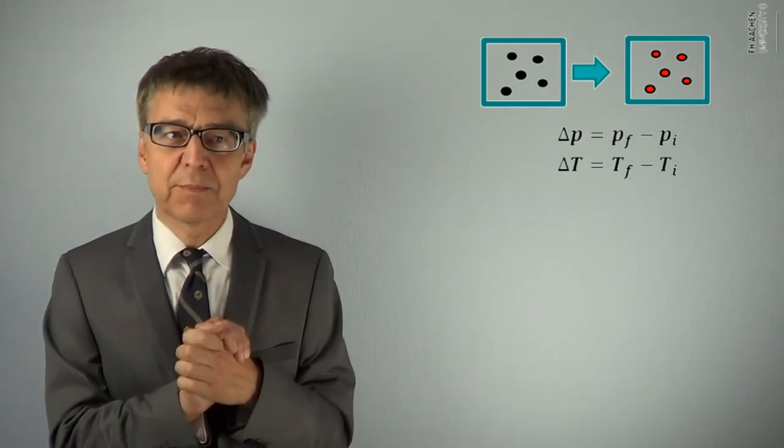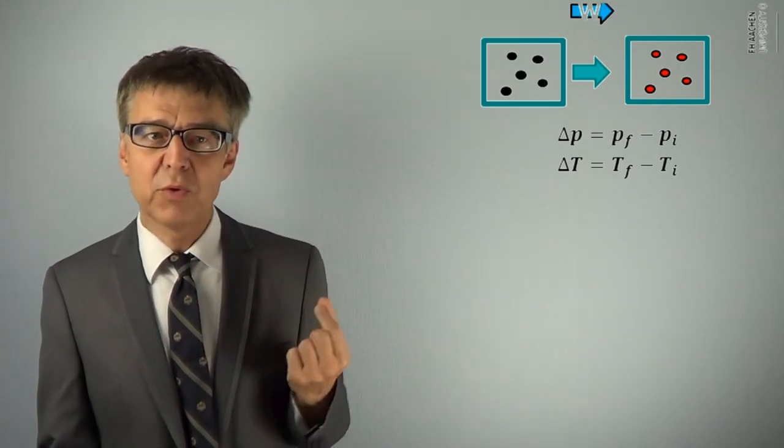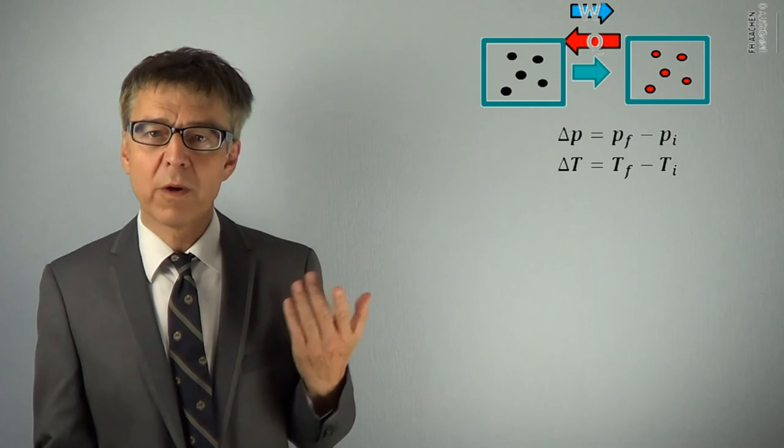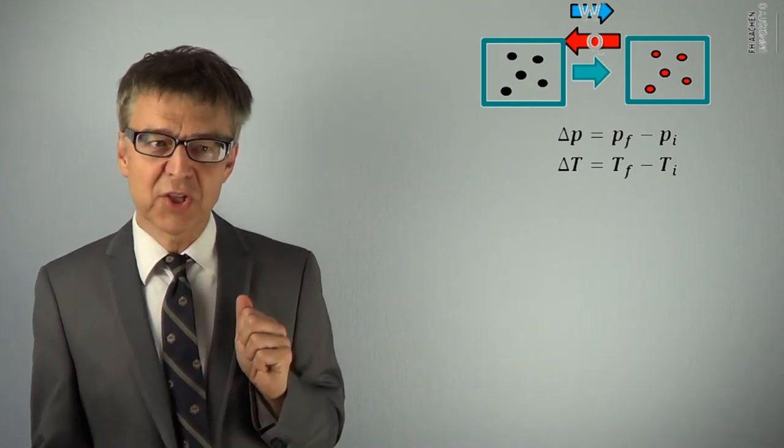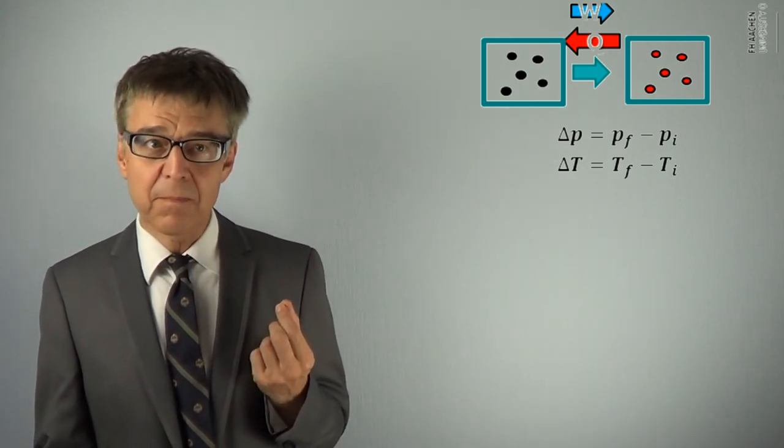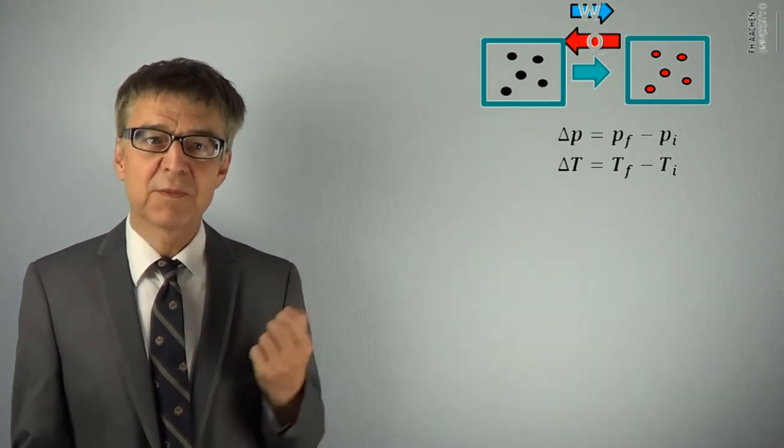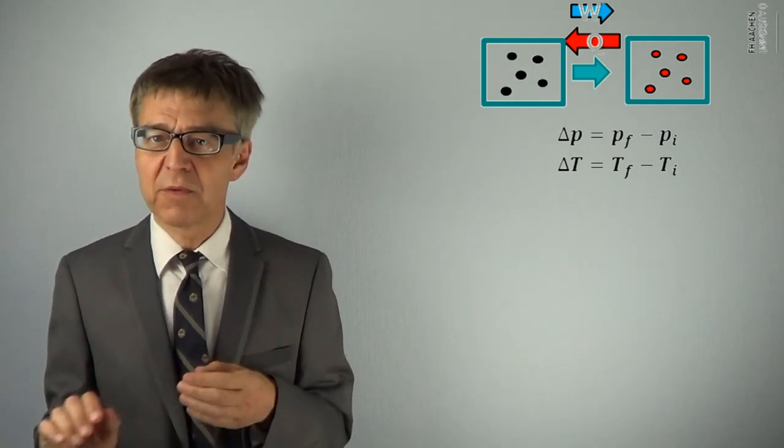Furthermore, we characterize the process by specifying the process variables q and w, work and heat. Unlike state variable changes, the process variables are dependent on the path and we need to specify the path on which we have moved from the initial state to the final state.